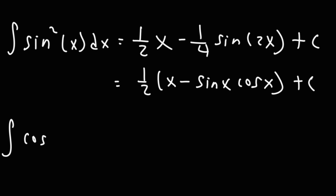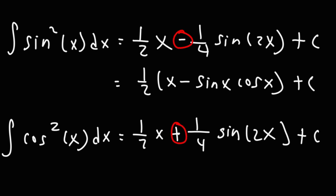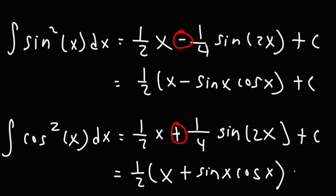The indefinite integral of cosine squared x dx is very similar: 1/2 x, but instead of minus it's plus, so it's 1/2 x plus 1/4 sine 2x plus c. The only difference from sine squared is the plus instead of minus. We can also write it as 1/2 x plus sine x cosine x plus c.